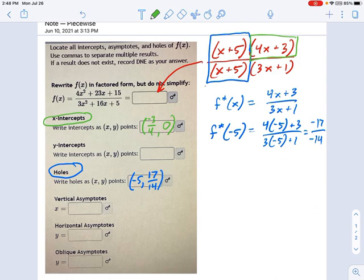And for the y-intercept, what we do here is you go back to the original equation, and you just take a ratio of the constant terms. Or, in other words, you set x equal to 0. And if x equals 0, then those are 0, those are 0. All that's left is 15 over 5, which is 3.